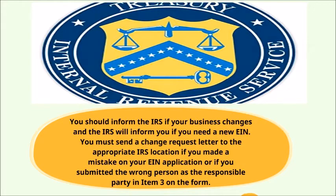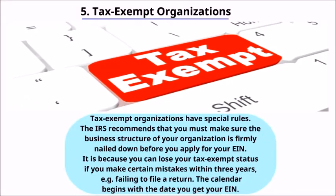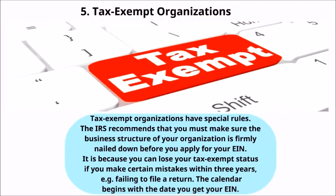Tax-exempt organizations have special rules. The IRS recommends that you make sure the business structure of your organization is firmly established before you apply for your EIN, because you can lose your tax-exempt status if you make certain mistakes within three years — for example, failing to file a return. The three-year calendar begins on the date you receive your EIN.